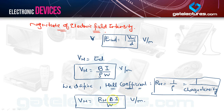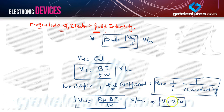We can say that VH equals RH·B·I divided by W. This is the expression for Hall voltage in terms of RH (Hall coefficient), B (magnetic flux density), I (current), and W (width). From this, VH is directly proportional to RH. So the deciding factor of the Hall voltage sign is RH.